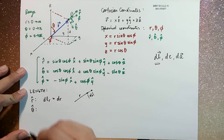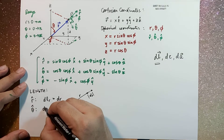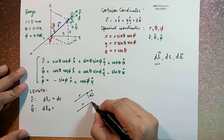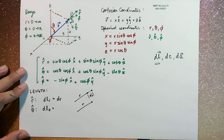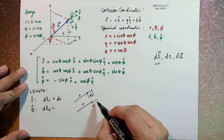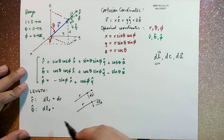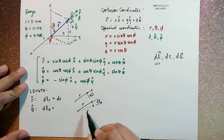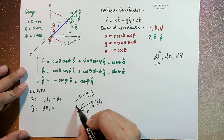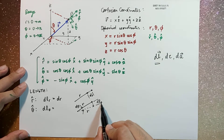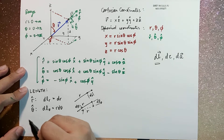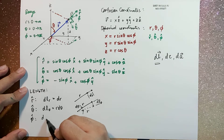Along the theta component, dl in the theta direction is similar to your arc length. So for example, if this is r and then this point moves infinitesimally along the direction of theta-hat, this is dl-theta. Since this infinitesimal angular displacement is d-theta, dl-theta is equal to r d-theta.